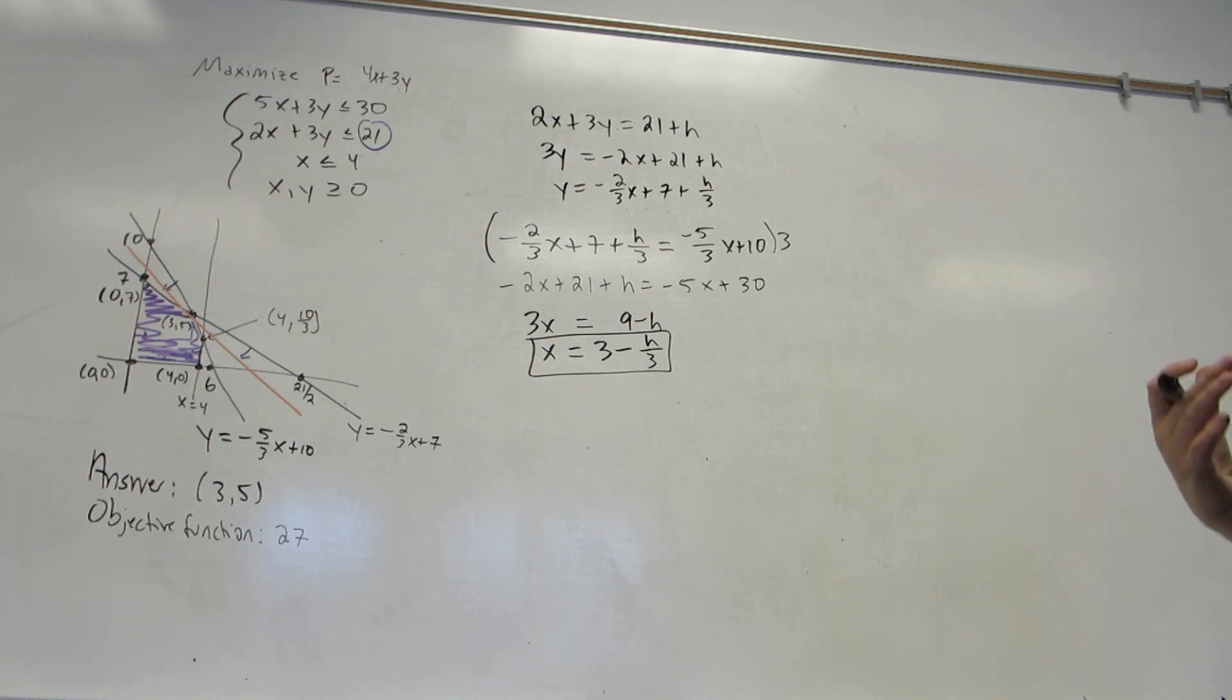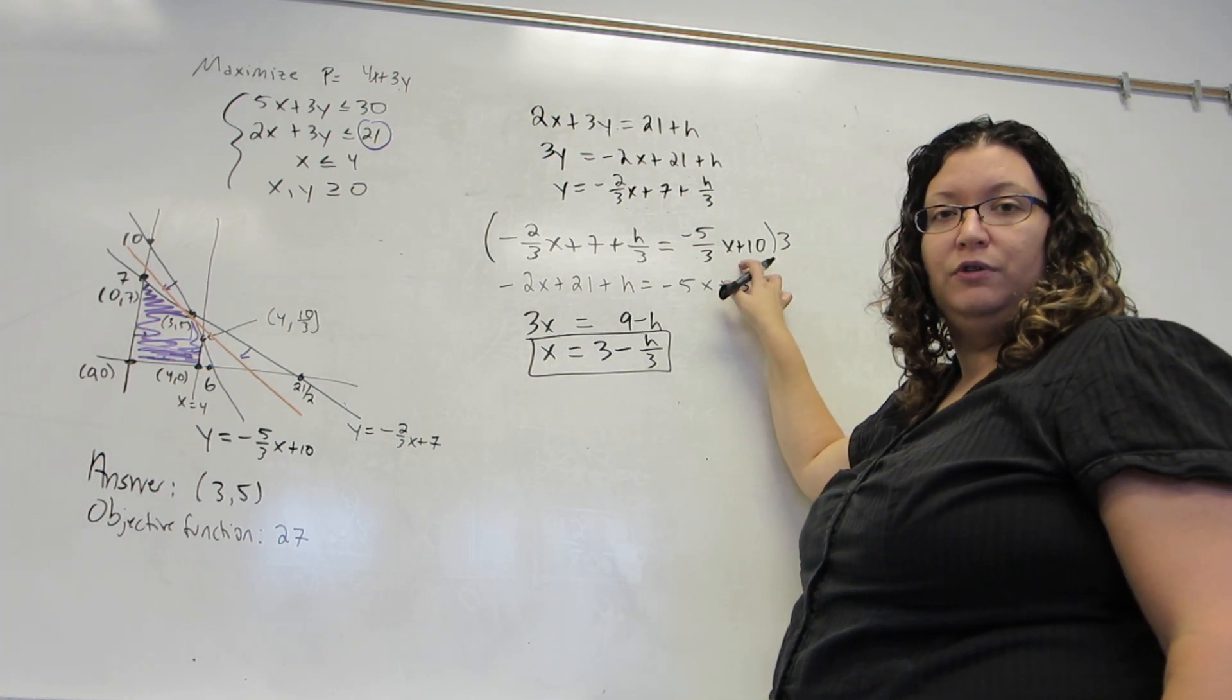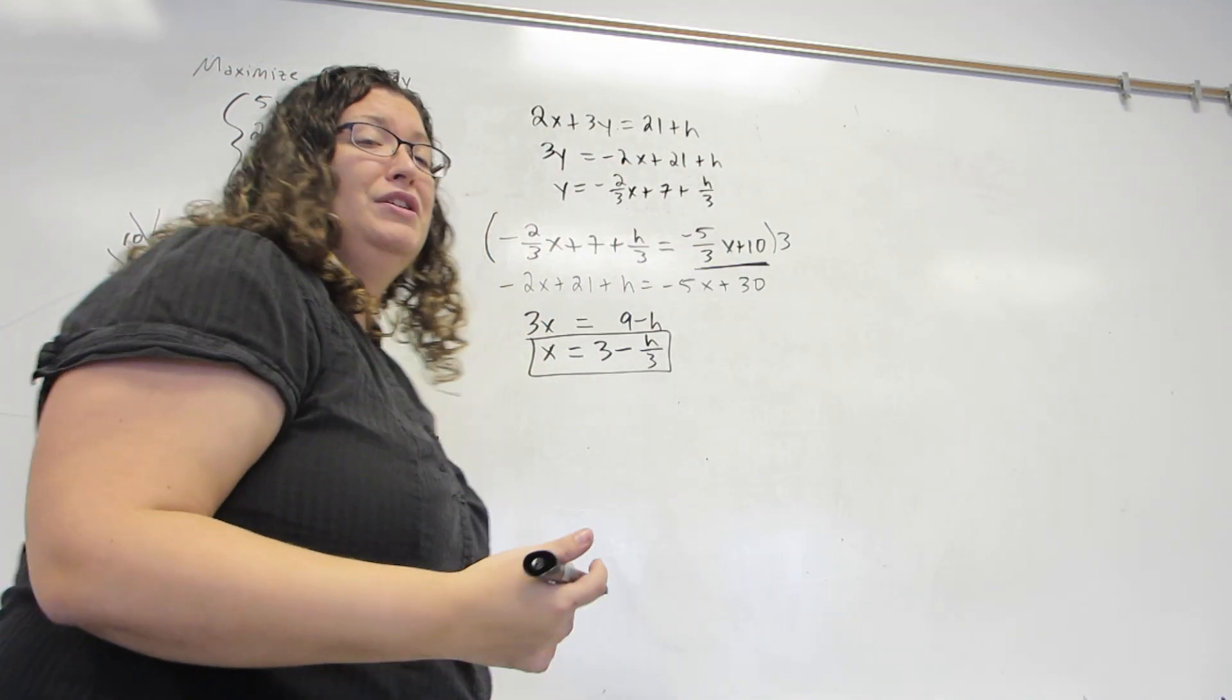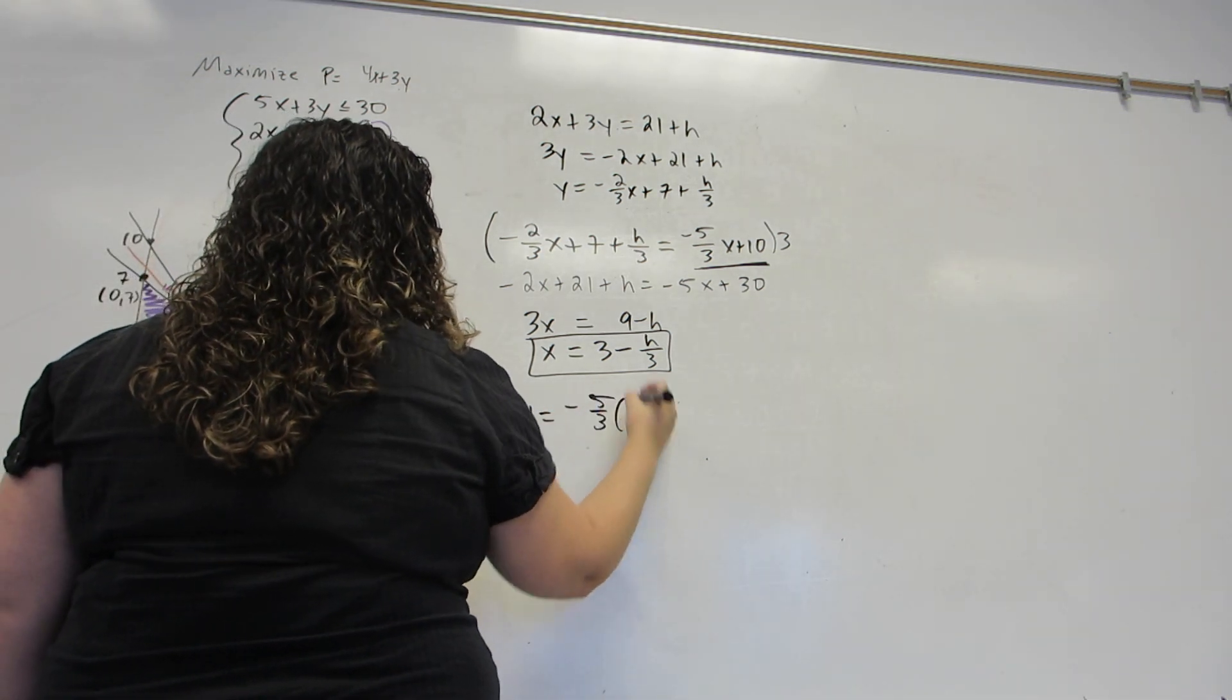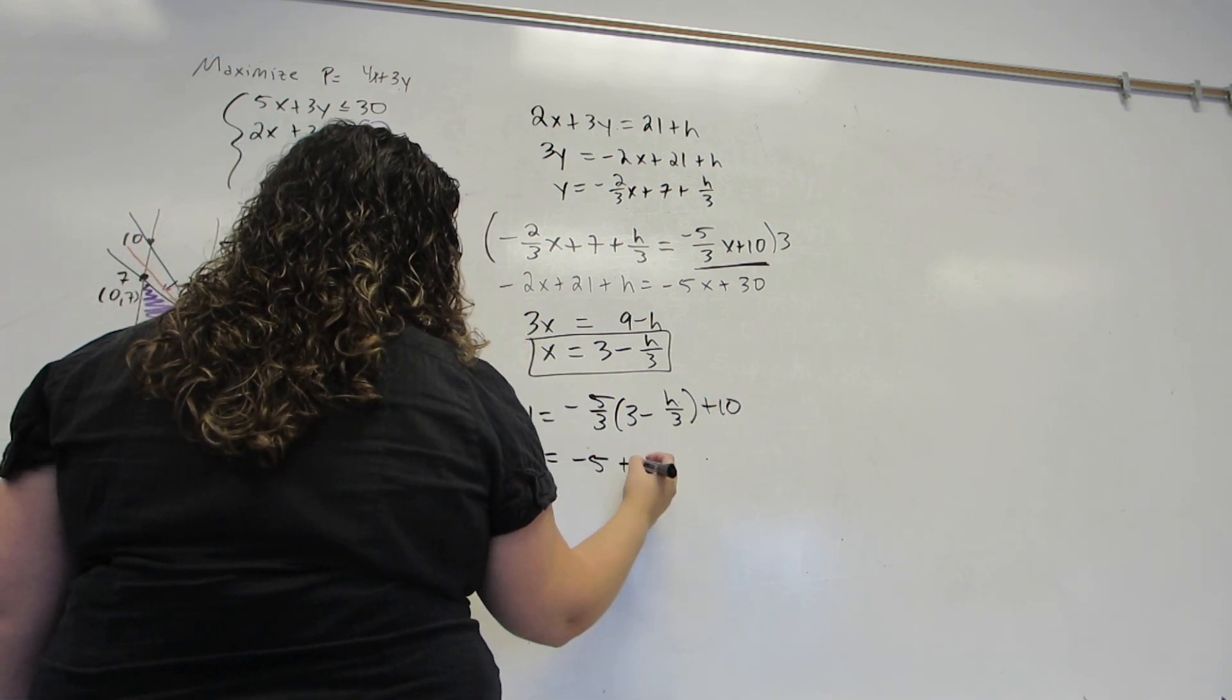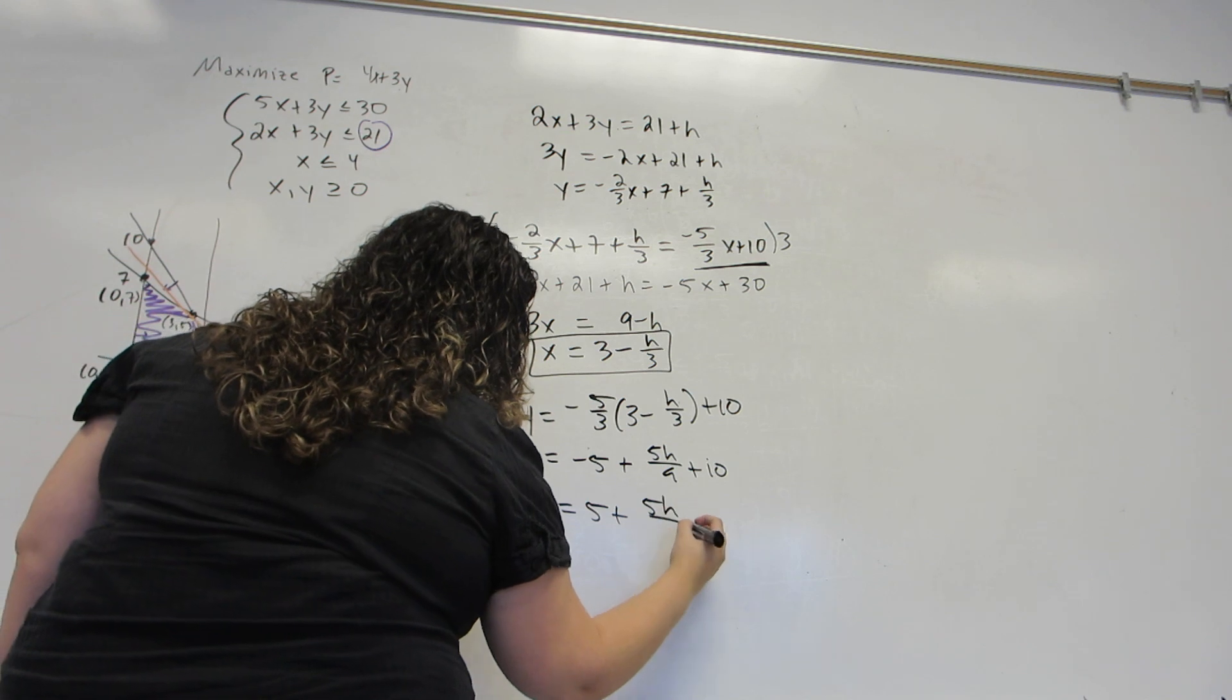Now, I need Y. I'm going to do the same thing to get Y as I normally do. I'm going to plug it into one of the two original equations we set equal to each other. I'm going to choose to plug it into this one, since that doesn't have an H in it. I don't want to add more H's to the picture. So, Y will be minus 5 thirds times this value of X plus 10. Or Y will be minus 5 plus 5H over 9.